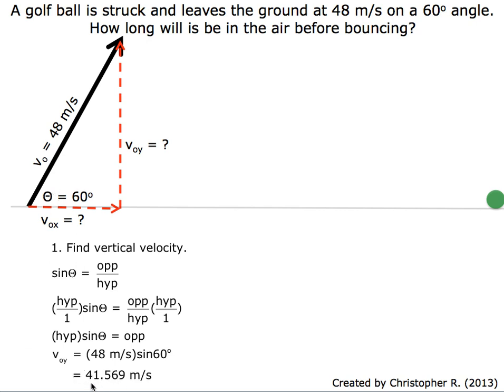Once we put those into our calculator, it's 41.569 meters per second. So now we know the initial velocity in the vertical direction.